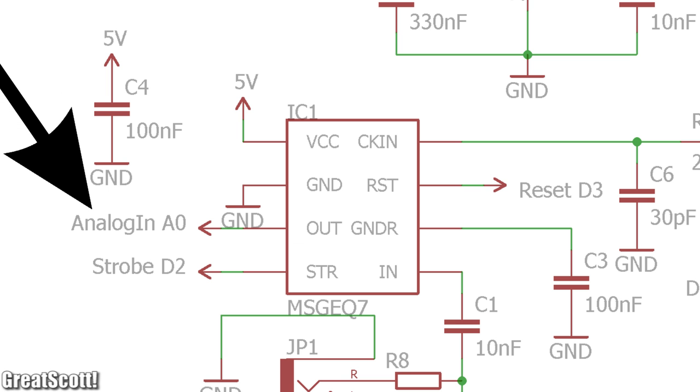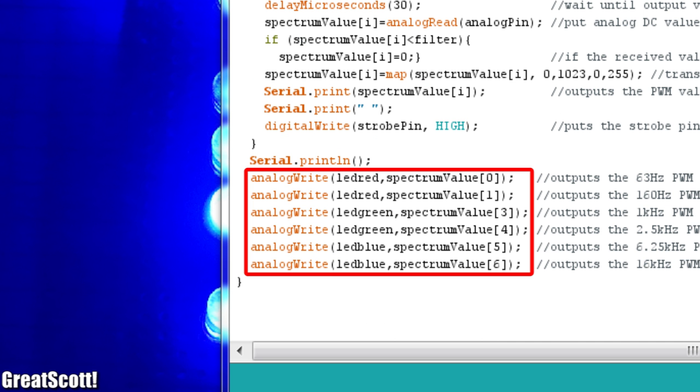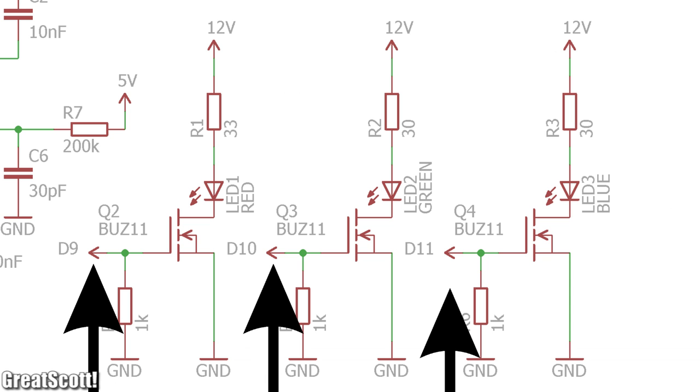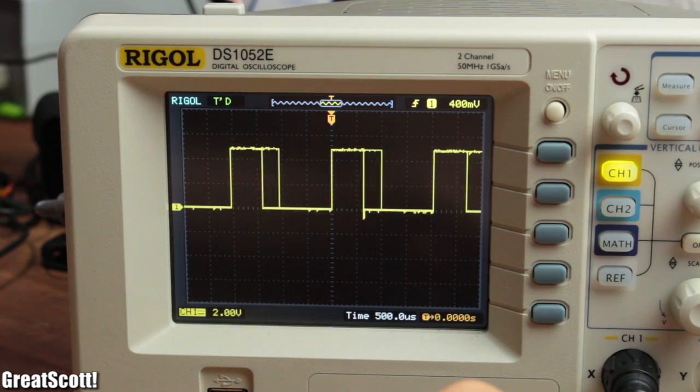We use the analog pin 0 of the Arduino to measure those and store them in a variable where we can use them shortly after to generate a PWM signal on the pins 9, 10 and 11, which then controls the gate of our MOSFETs and lets the LEDs shine.